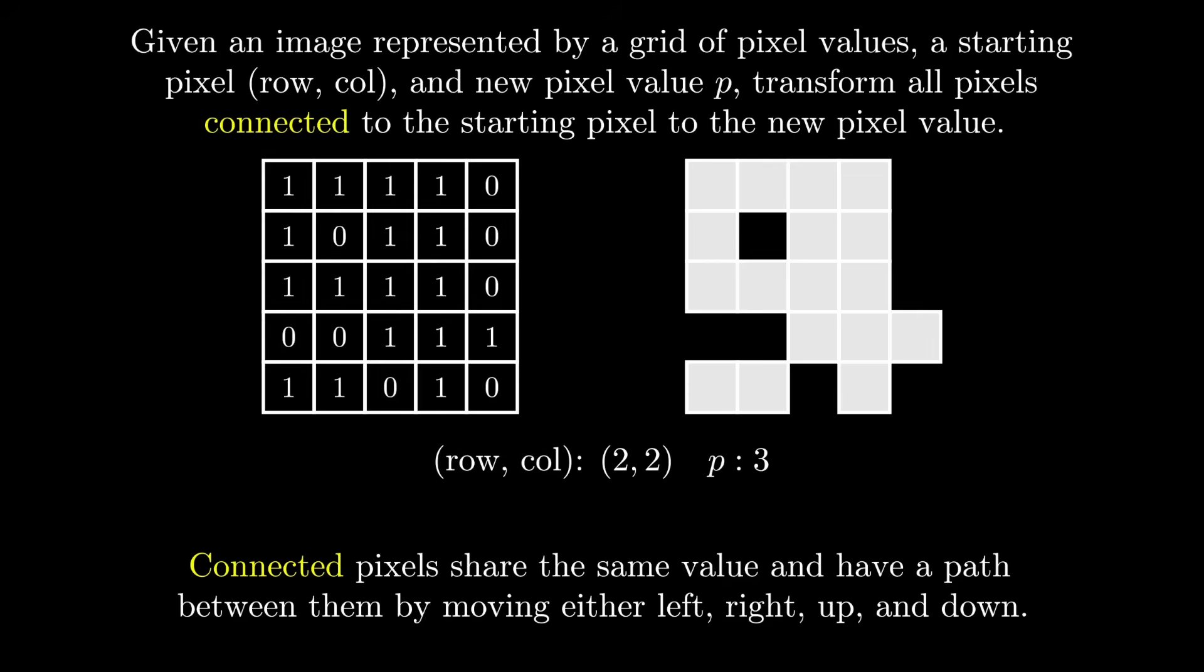So looking at an example, given a location of row 2 and column 2, our starting pixel is the center of this image. Our new pixel value is 3.